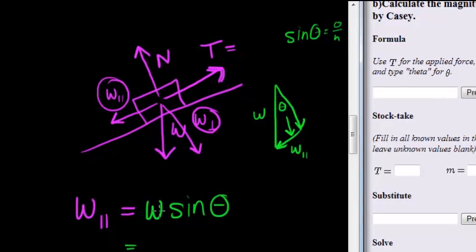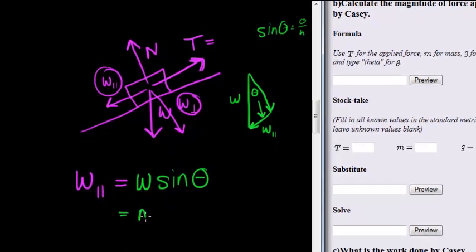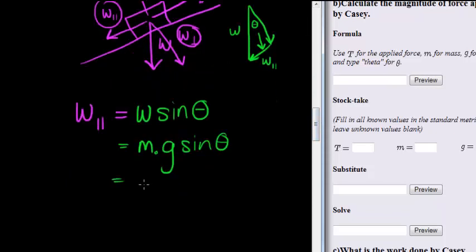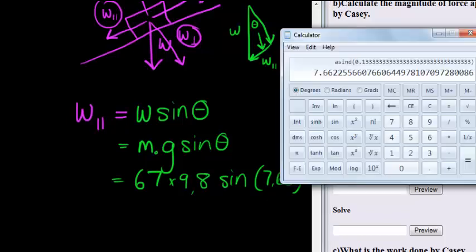So the weight here, remember, is mass times gravity times sine of theta. Which in this case, the mass we calculated at 67 kilograms, gravity is always a lovely 9.8, and sine we calculated at 7.66 degrees. So let's go calculate that force.